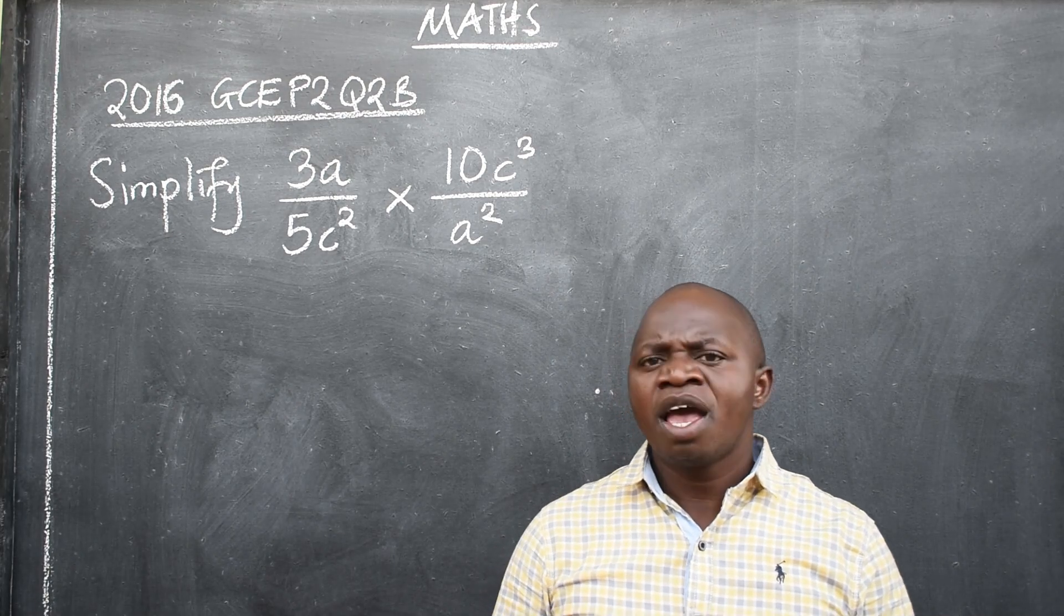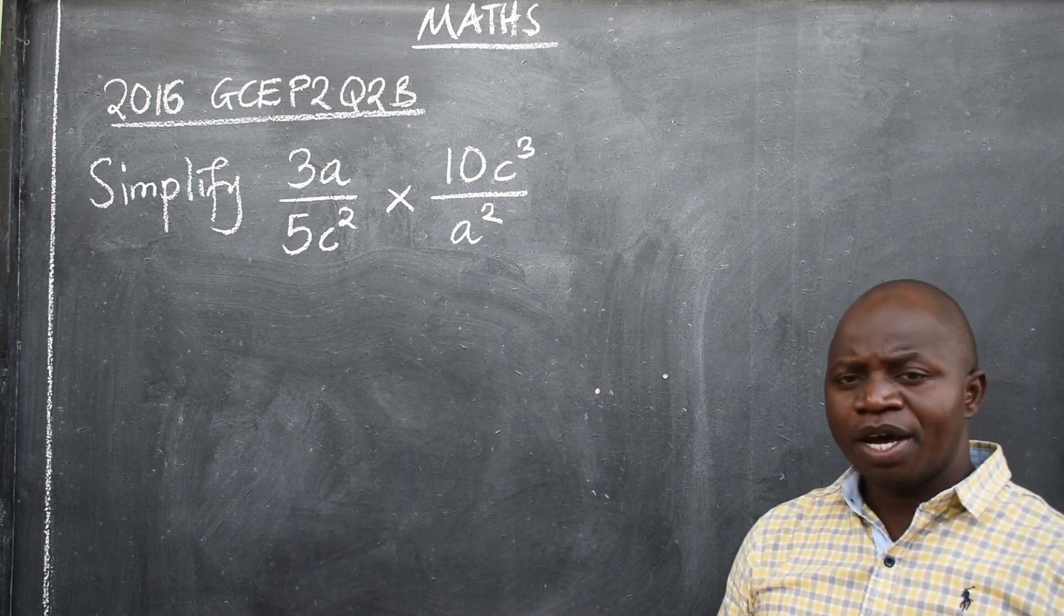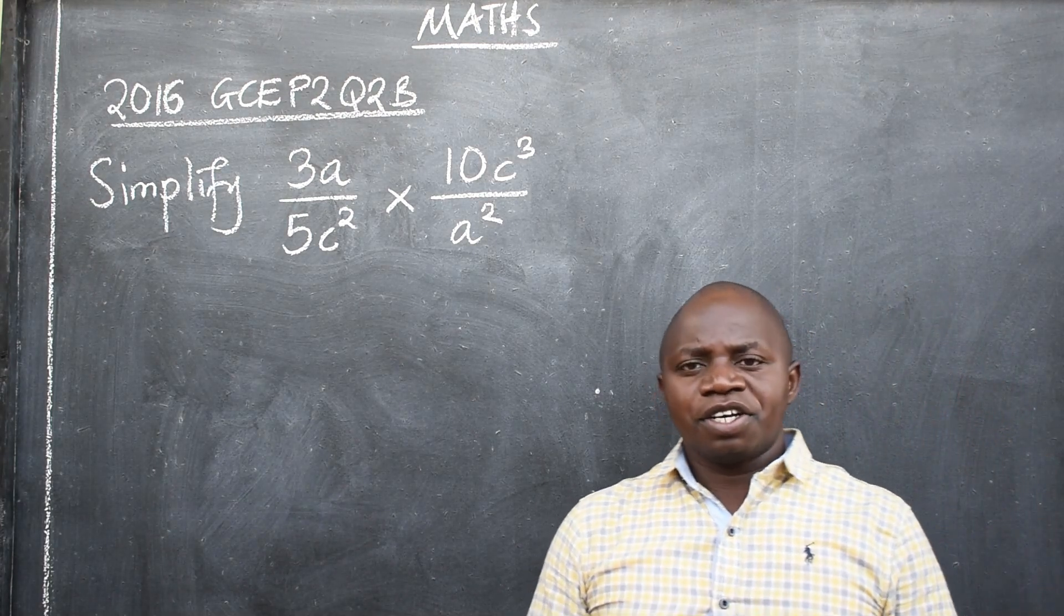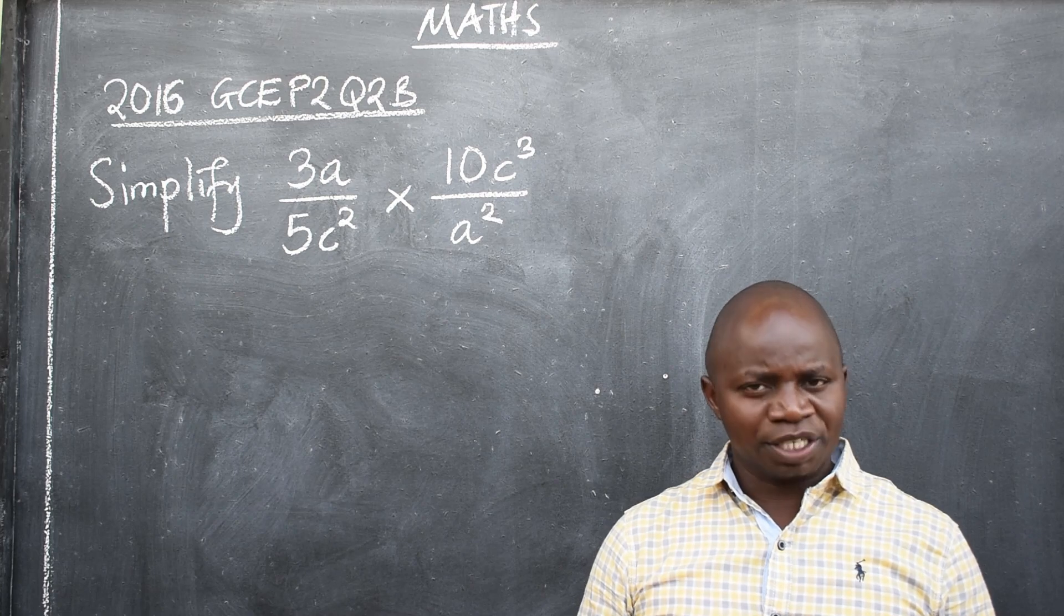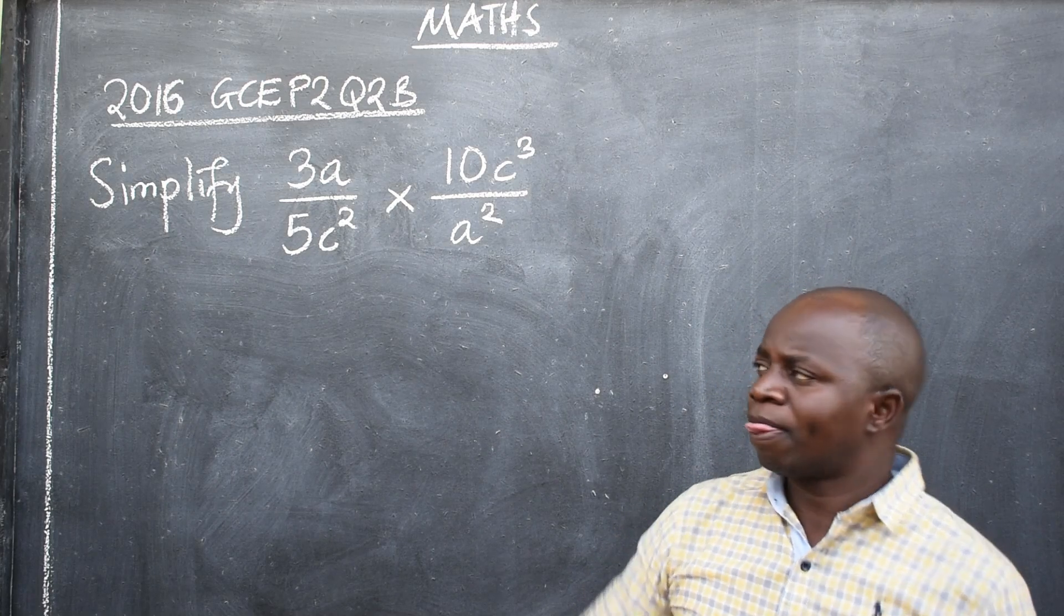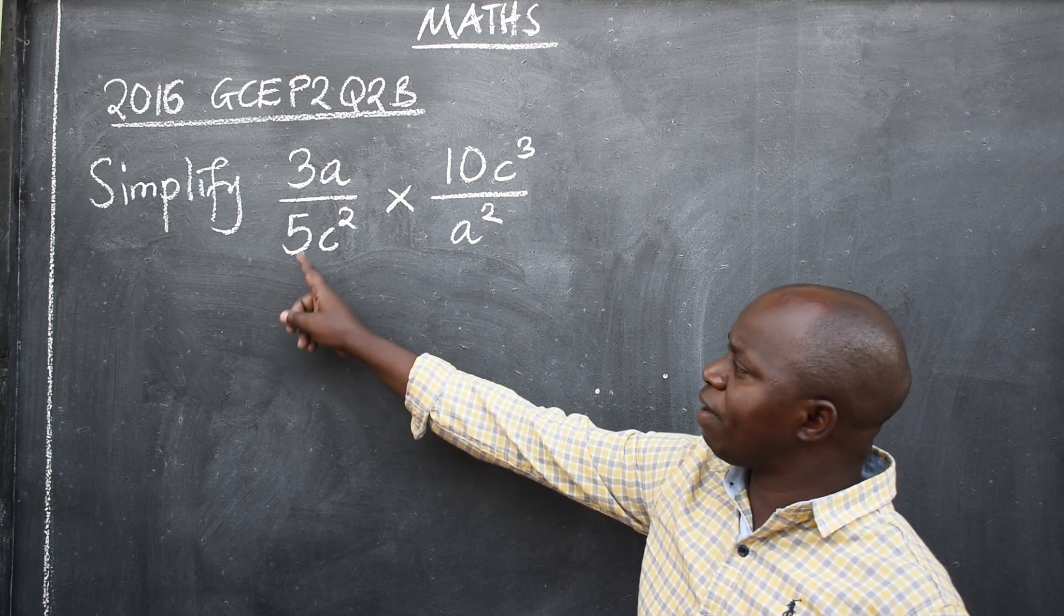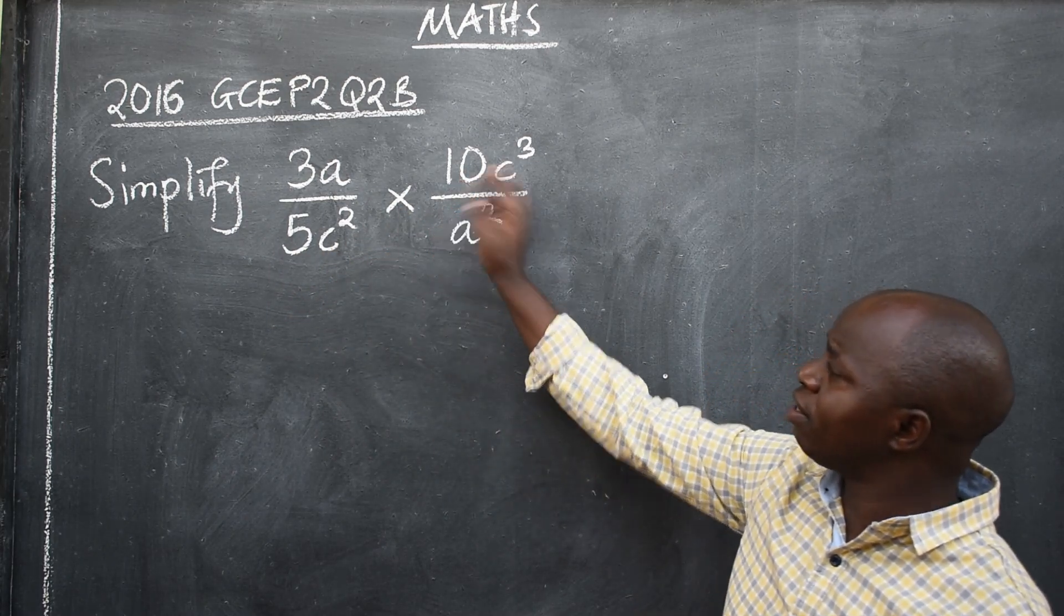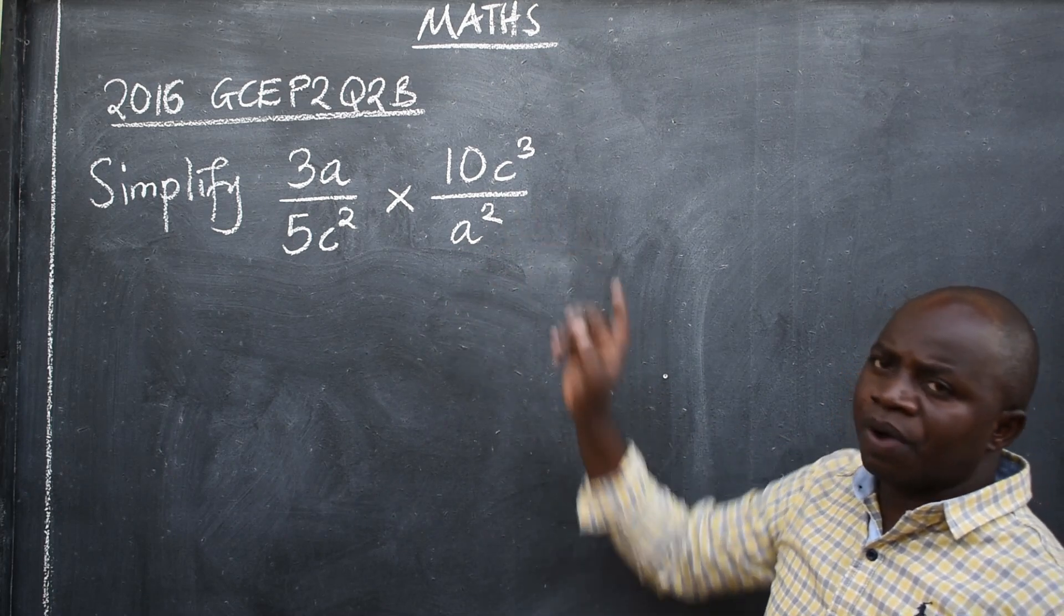In this lesson we want to look at the question you are seeing on the board. The question is from 2016 General Certificate of Education, GCE, paper 2, question number 2b. Simplify 3a divided by 5c squared times 10c to the power 3 divided by a squared.